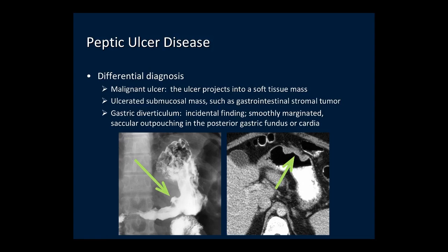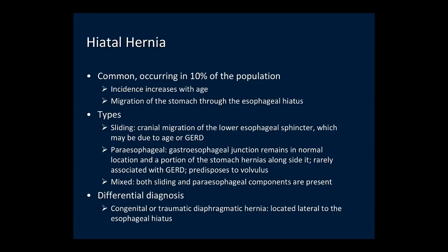The other differential diagnosis is a gastric diverticulum, which typically occurs in the posterior gastric fundus or the cardia, and is a smoothly marginated saccular outpouching. Hiatal hernias are quite common, occurring in about 10% of the population. Their incidence increases with age, and it represents migration of the stomach through the esophageal hiatus. There are three types: sliding, paraesophageal, and mixed. The main differential diagnosis is a diaphragmatic hernia.